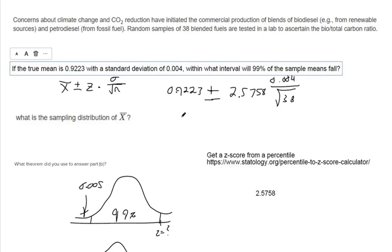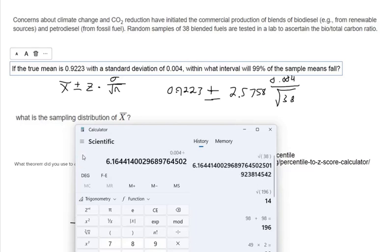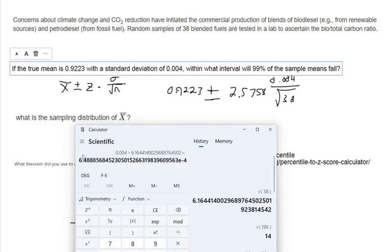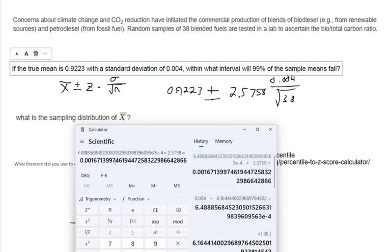So in my calculator, I'm going to do the square root of 38 first in my calculator. And I'll copy this to my clipboard. So I'm holding control and pressing C. And we've got 0.004 divided by that square root of the sample size. And then that's scientific notation. That's a really small number. That's 0.648 times 10 to the negative 4th power. So I'm going to multiply that result by 2.5758. And so there's our margin of error.